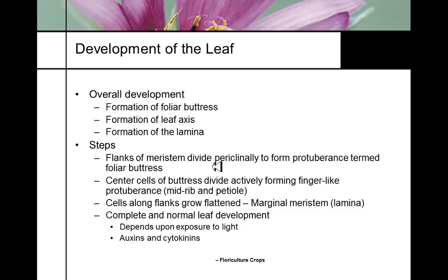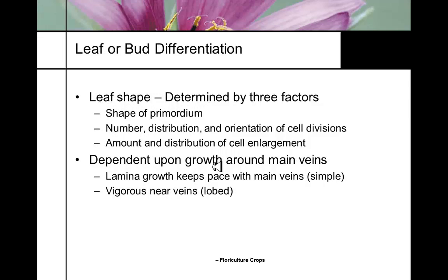The overall development of a leaf begins with the foliar buttress, then formation of the leaf axis, then formation of the lamina or blade. They divide to form the protuberance and eventually develop a full leaf. Leaf development is dependent on a balance of auxin and cytokinin, and we can modify some of these things in the greenhouse. Leaf shapes and patterns are primarily based upon the shape of the primordium, which is governed by genetics, number and distribution of cells, how fast they grow, and the distribution of cell enlargement.